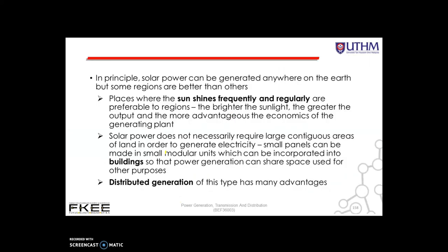Next is the sites for solar power generation. In principle, solar power can be generated anywhere on Earth, but some regions are better than others. Places where the sun shines frequently and regularly are preferable — the brighter the sun, the greater the output and the more advantageous the economics of the power plant. Solar power does not necessarily require large contiguous areas of land; small panels can be made in modular units incorporated into buildings, so power generation can share space used for other purposes. Distributed generation of this type has many advantages.